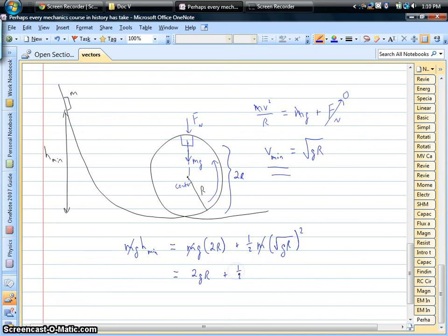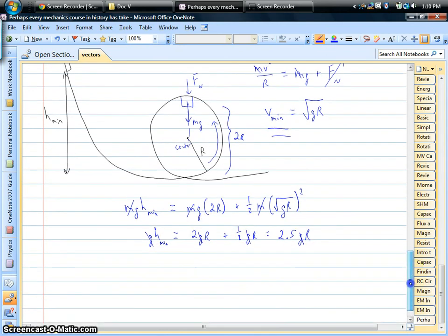we have two times acceleration of gravity times radius. Now over here we've got one-half. Okay, when we square that, acceleration of gravity times radius. Well, that's two-and-a-half acceleration of gravity times radius. Okay, the acceleration of gravity drops out. And we now have our minimum height.